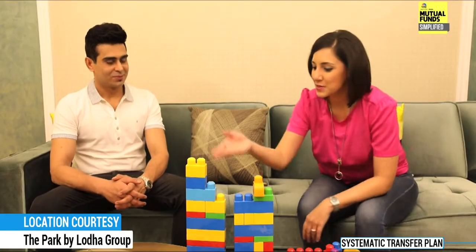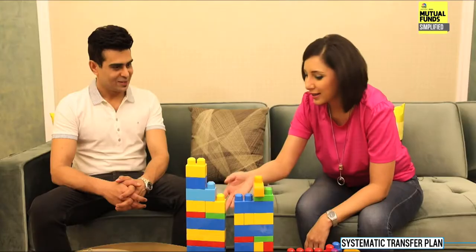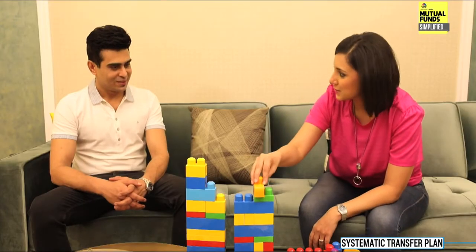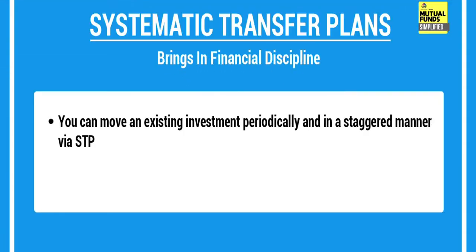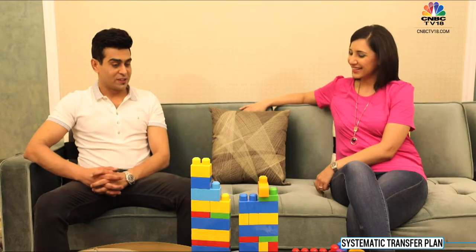Sumera agrees it makes perfect sense — the complete tower becomes the source fund, and the other becomes the fund into which she's transferring. So if there is a lump sum amount in a particular scheme, you can regularly transfer a fixed or variable amount into another scheme, just like the towers in front of them.